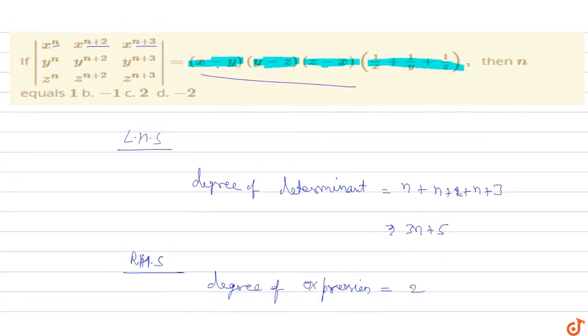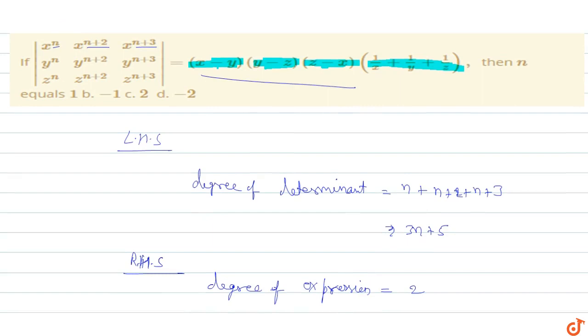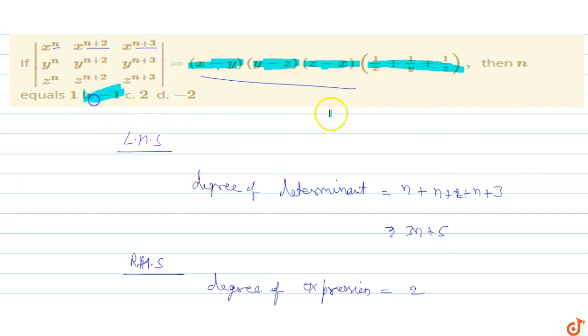So the value of this determinant x minus y into y minus z into z minus x into 1 by x plus 1 by y plus 1 by z, then n equals to minus 1. Option B will be the correct option.